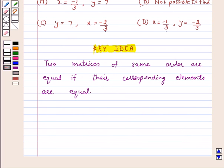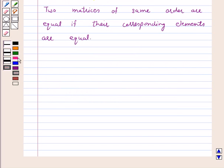According to the definition of equal matrices, two matrices of the same order are equal if the corresponding elements are equal. This is the key idea behind this question. Let's start the solution.